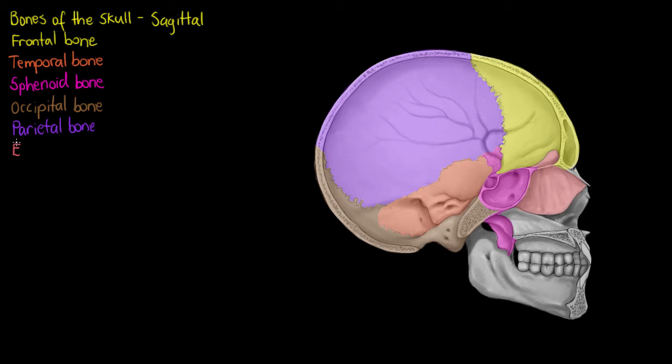The next bone I have highlighted here is our ethmoid bone. Another bone which we could only see a small surface of when we viewed it anteriorly. And next we will have our maxilla which will make up the upper half of our facial bones when we view it anteriorly as well.